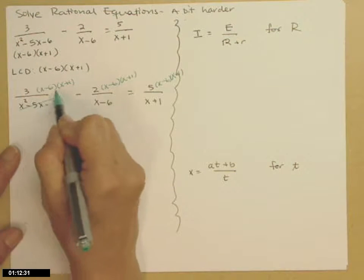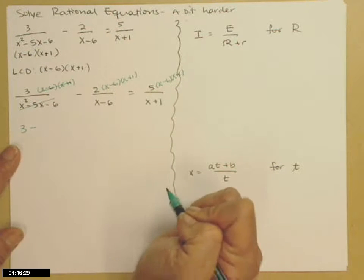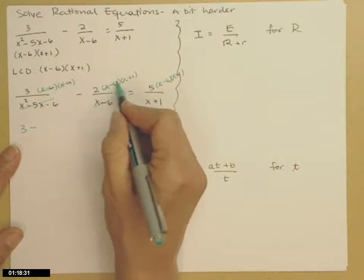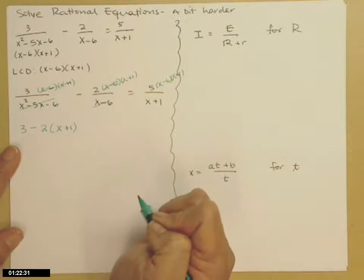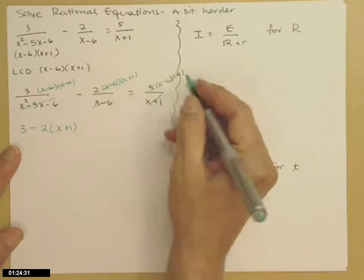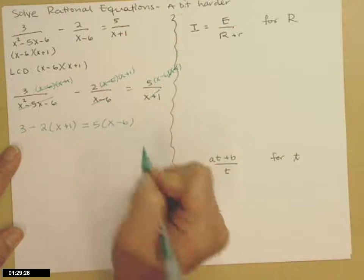On that first fraction, the entire denominator cancels, and I just get left with the 3. Second term, the x minus 6s cancel, and I get negative 2 times x plus 1. And on the other side of the equal sign, x plus 1s cancel, and I get 5 times x minus 6.